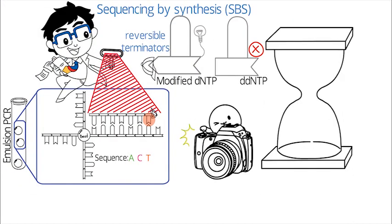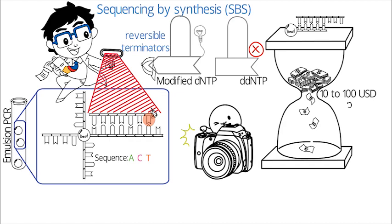By anchoring to a surface and taking the image in real-time, SBS reduced the cost of sequencing to between 10 to 100 USD per MB, in a matter of hours.